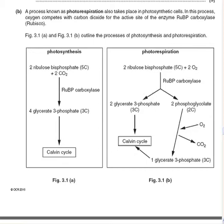A process known as photorespiration also takes place in photosynthetic cells. In this process, oxygen competes with carbon dioxide for the active site of the enzyme ribulose bisphosphate carboxylase, also called rubisco.